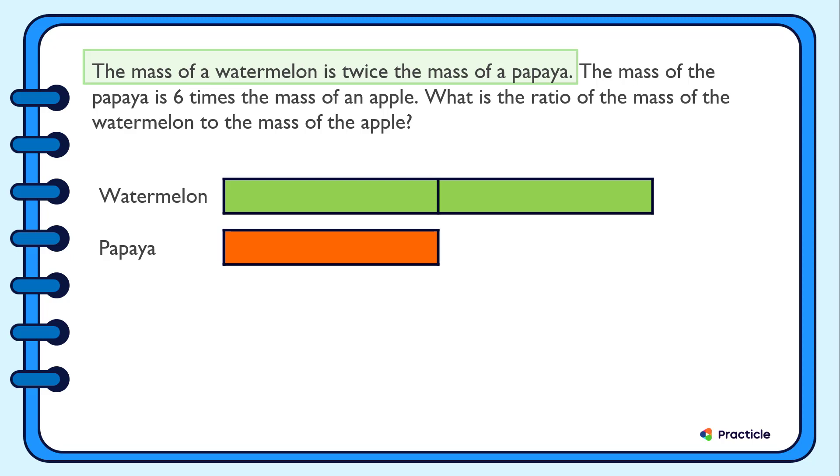Next, let's read on to see what else we are given. We are given that the mass of the papaya is six times the mass of an apple. This time round, we are comparing the mass of the papaya and the mass of an apple.